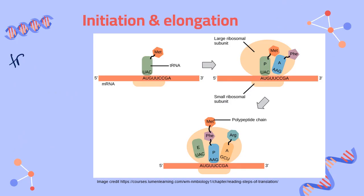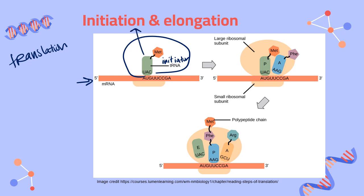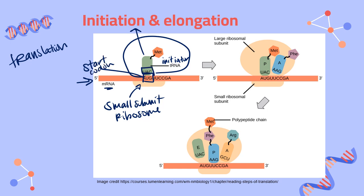Now we come to translation — the process of using that mature messenger RNA to produce a strand of amino acids, that polypeptide chain. The initiator transfer RNA binds to the small subunit of a ribosome. Together, the small subunit and the initiator tRNA slide along the messenger RNA until they reach the start codon. The initiator tRNA carries the anticodon matching the start codon and is bound to the amino acid methionine — our start amino acid. Once the initiator tRNA is bound to the start codon, the large subunit of the ribosome clicks into place, and this initiator tRNA sits in the P site.